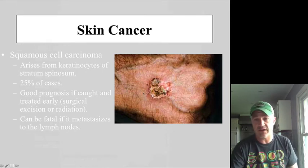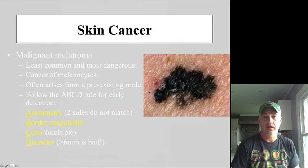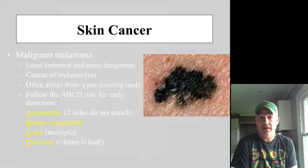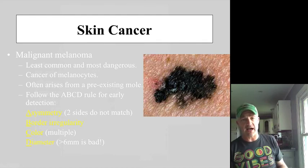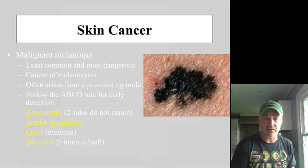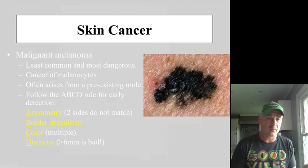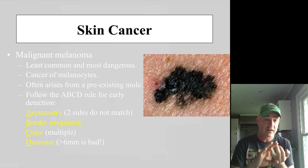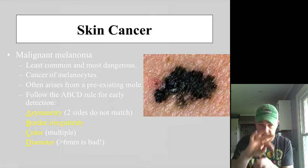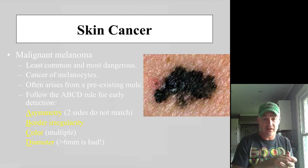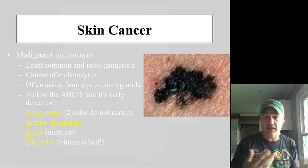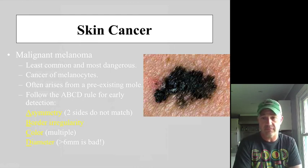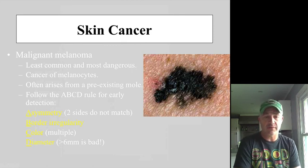Malignant melanoma is the least common but most dangerous skin cancer — it tends to metastasize much earlier. It is a cancer of melanocytes and often starts from an existing mole. The ABCD rule is used to assess suspicious moles: look for Asymmetry, irregular Border, multiple Colors, and larger Diameter. Bigger is definitely not better when it comes to moles on the body.